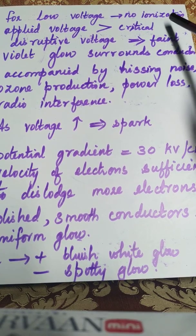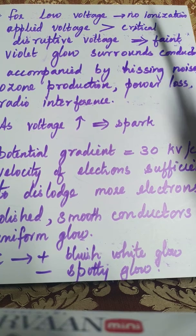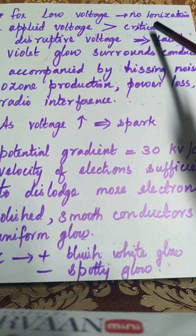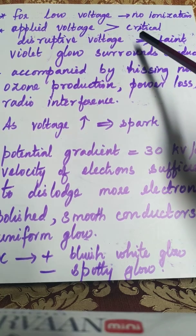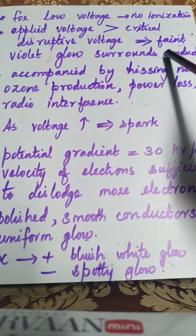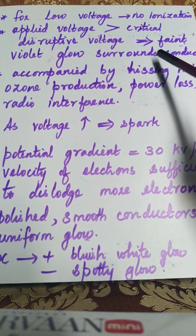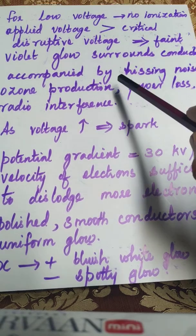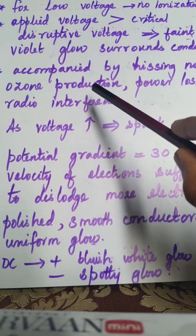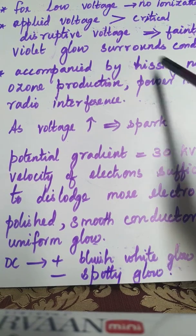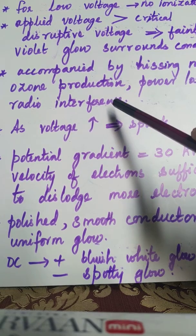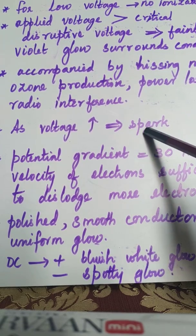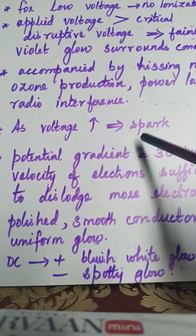For low voltage, the ionization effect will also be less. But if the applied voltage exceeds the voltage called the critical disruptive voltage, we can see a faint violet glow surrounding the conductor. This violet glow is accompanied by a hissing sound, ozone production, power loss, and radio interference. All these effects together constitute the corona effect. If we keep on increasing the applied voltage, a spark or flashover forms between the current-carrying conductors.